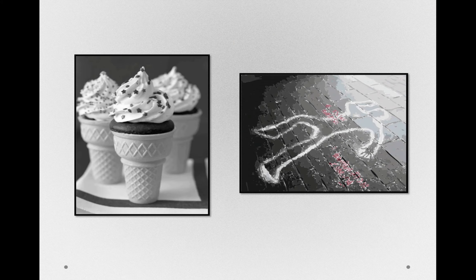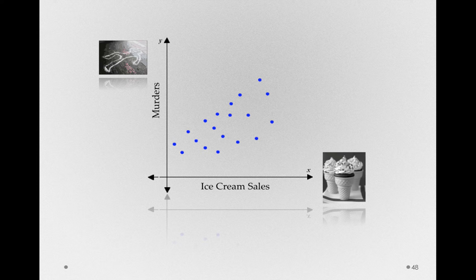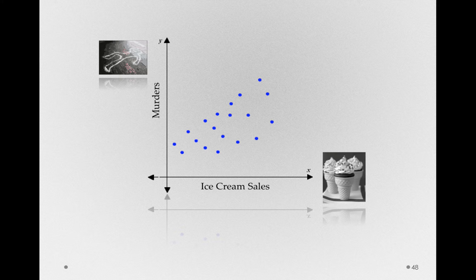What we'll find is that across these cities, those that have higher sales of ice cream will also have higher murder rates. If we plot this in a scatter plot, we'll see something like this, where those cities that have higher sales of ice cream also tend to have more murders. Can you think of any reasons why we might observe such a relationship if in fact ice cream doesn't cause people to murder each other?